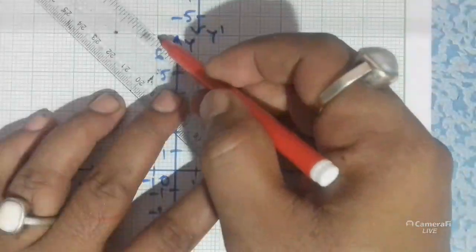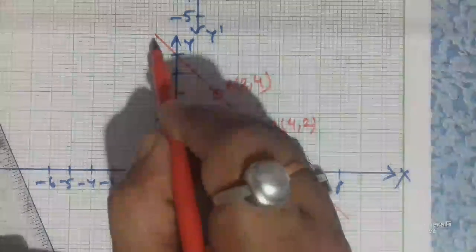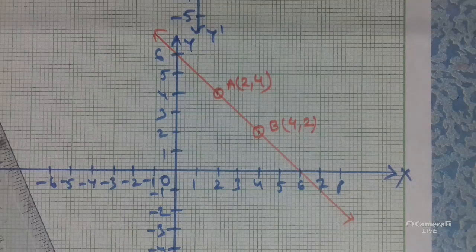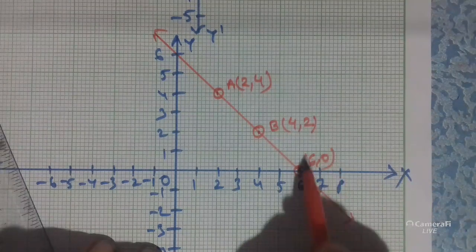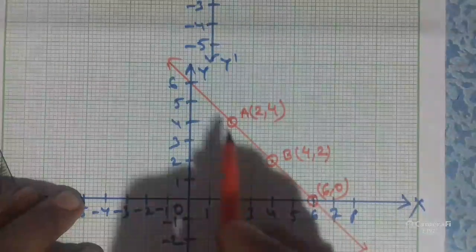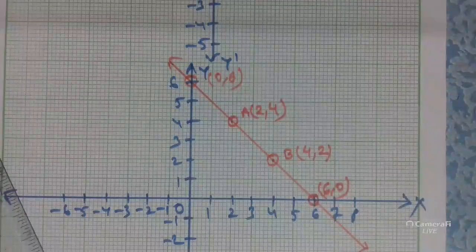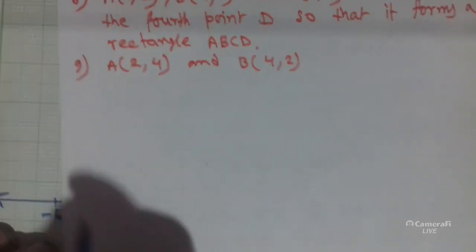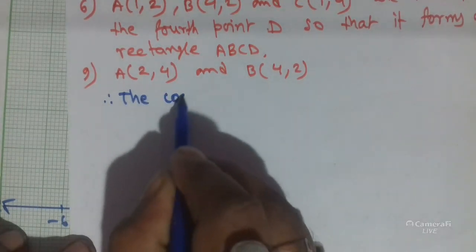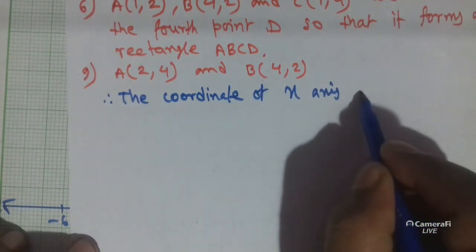Problem 7 is similar to Problem 6 — locate the points and find the fourth point D. Now for Problem 9: plot the points A(2,4) and B(4,2). After plotting these points, we join A and B to get a line segment.